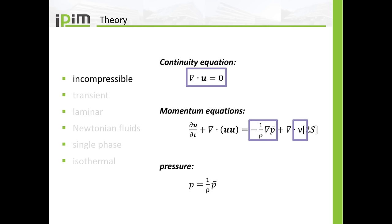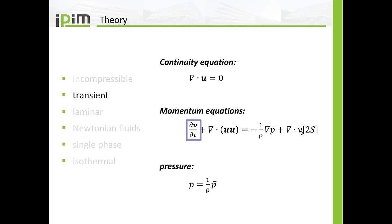Now as for the theory: incompressibility means that the continuity equation reduces to the simple equation where the divergence of the velocity is zero. In the momentum equations you can divide by the density, and what you end up with is that in the pressure gradient term you divide by the density, and in the diffusion term you have the kinematic viscosity instead of the dynamic viscosity. Transient behavior can be seen in the momentum equations — you have a partial time derivative. You would also have a partial time derivative in the continuity equation, but since we are assuming an incompressible fluid, the density does not change over time.